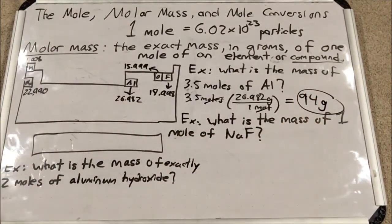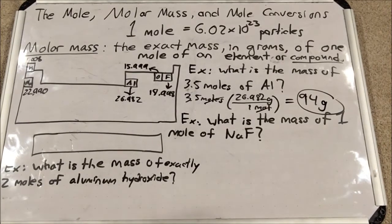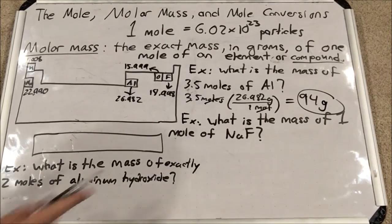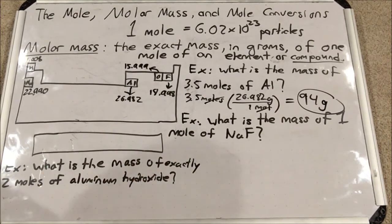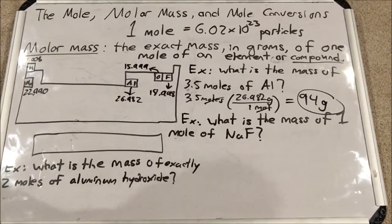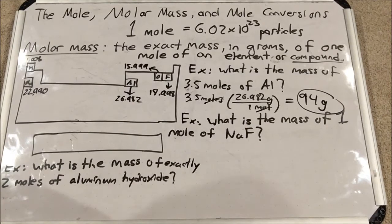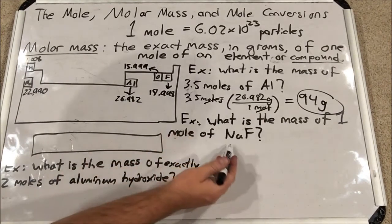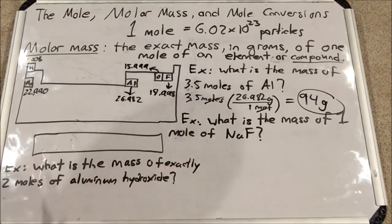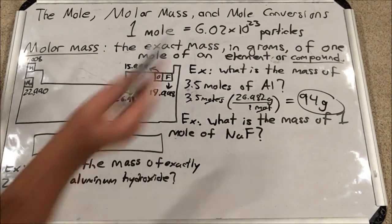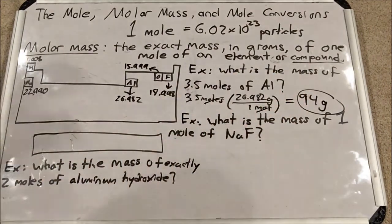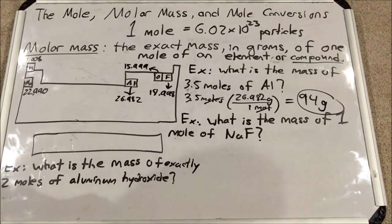Next: what is the mass of one mole of NaF, known as sodium fluoride? Here I have Na — one atom — and F — one atom. Remember, molar mass works for compounds as well; it's the exact mass in grams of one mole of a compound. A compound has multiple elements, so I have to find sodium and fluorine on the periodic table and add one of each of their molar masses together.